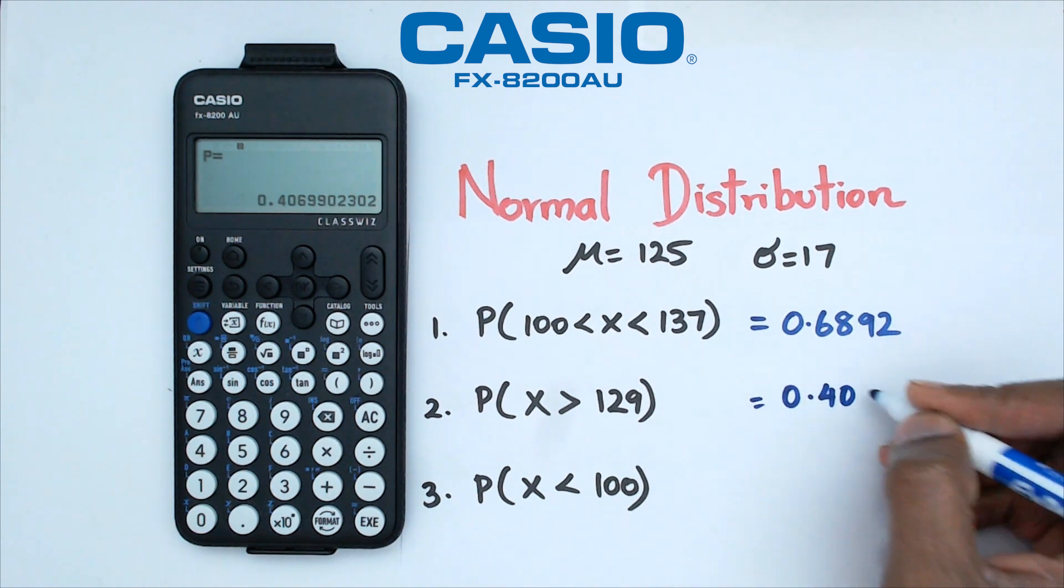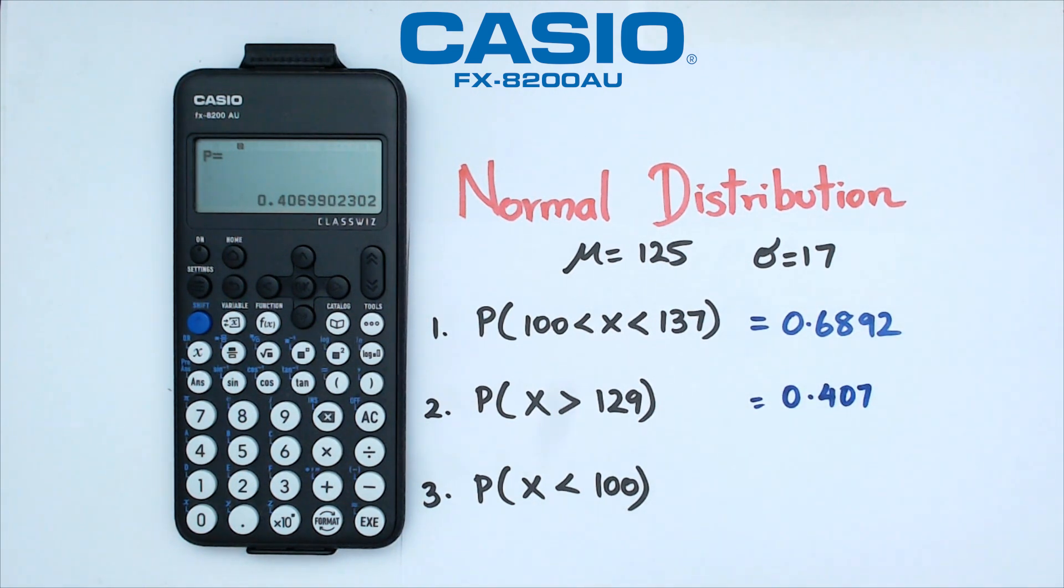And finally, looking at question number three here, we've got probability of X less than 100.